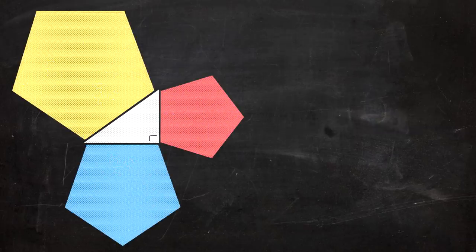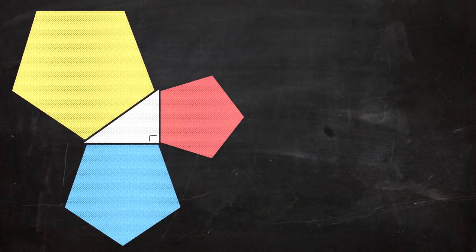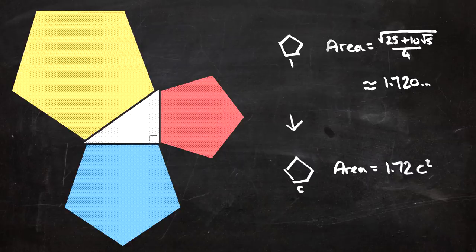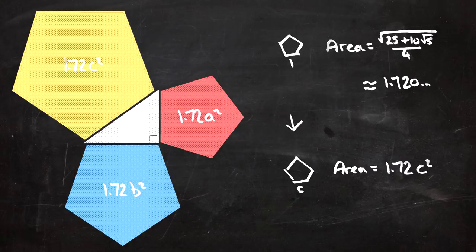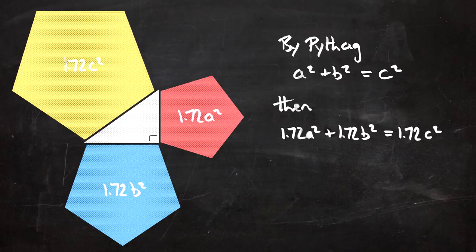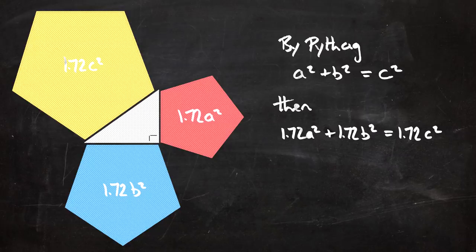Let's keep going — what about pentagons? By now you might be able to predict what's going to happen. Let's say we took a pentagon of side length 1. There is a formula to work out the area of a pentagon; it's quite complicated, and actually it doesn't even matter. Let's say for our purpose that the area is about 1.72. If we scale that up by c, the width and the height are multiplied by c, which means the area is multiplied by c squared. So the area of the big pentagon here is going to be 1.72 c squared. In the same way, the other pentagons are going to have areas of 1.72 a squared and 1.72 b squared. Because the Pythagorean theorem is true, we automatically get 1.72 a squared plus 1.72 b squared equals 1.72 c squared — we have a Pythagorean theorem for pentagons as well.